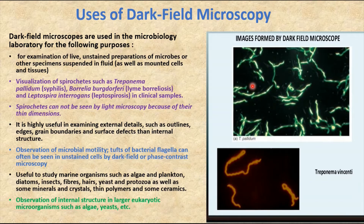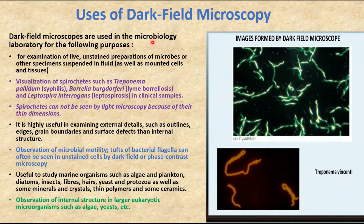With the help of the dark field microscope, we can visualize spirochetes such as Treponema pallidum, which causes syphilis, and Borrelia burgdorferi, which causes Lyme disease, present in clinical samples. These spirochetes cannot be seen by light microscopy because of their thin dimensions. The dark field microscope is also highly useful in examining external details such as outlines, edges, grain boundaries, and surface defects.